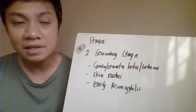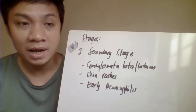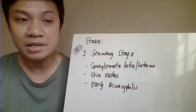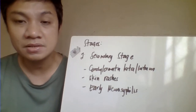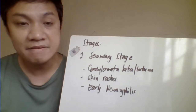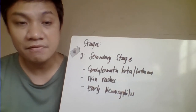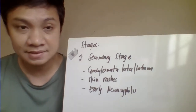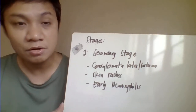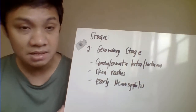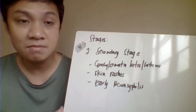Entry into the secondary stage occurs one to two months after the disappearance of the primary chancre. The secondary stage is characterized by generalized lymphadenopathy — enlargement of the lymph nodes — with manifestations of fatigue, fever, pharyngitis, and skin rash. The rash can be found on the skin or mucous membranes, most likely on the palms and soles of the feet.